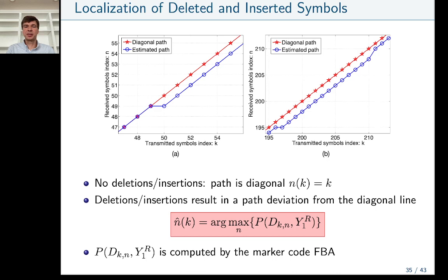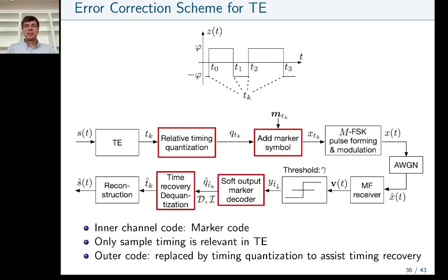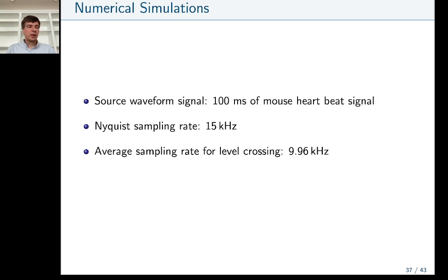For time encoding machines, all information is in the timing signal — there is no information in the amplitude. So instead of another code, we quantize the relative time: the placement of the middle event at time t₁ relative to neighboring event times. For 8-FSK, we have two bits for quantization and one bit for the marker symbol, giving a very coarse but effective quantization.